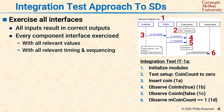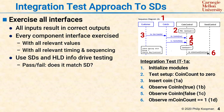You check that all inputs result in correct outputs. Every component interface is exercised across the whole set of sequence diagrams, with all the relevant values, with all the relevant timing and sequencing. If any of the sequence diagrams do not behave as expected, that means the software does not correctly implement the high-level design, and you have some sort of integration testing failure. The pass-fail criteria is whether or not the system behaves as the sequence diagrams say the system should behave.